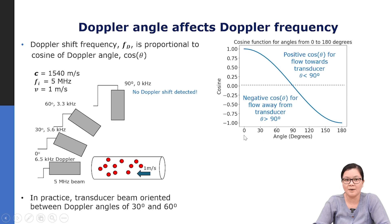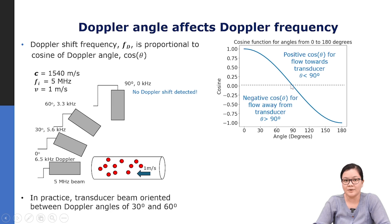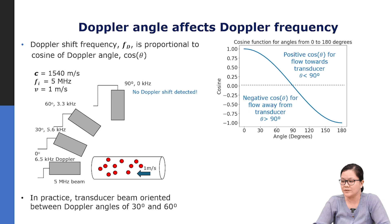This is because of the cosine function. Plotting the cosine of the Doppler angle from 0 to 180 degrees: as the angle increases from 0 to 90 degrees, cosine decreases from 1 to 0. Increasing the angle beyond 90 degrees makes the cosine negative, indicating flow away from the transducer. A positive cosine (angle less than 90°) indicates flow toward the transducer; a negative cosine indicates flow away from the transducer.